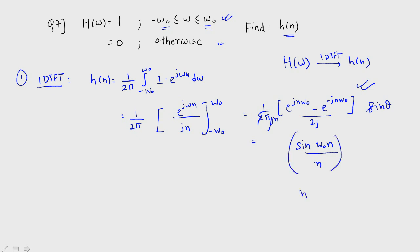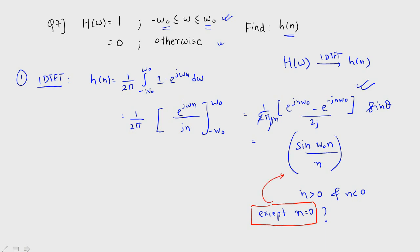This function is valid for n greater than 0 and n less than 0, but it is not valid for n equal to 0. Your question might be why — the answer is simple. If you put n equal to 0, you get sine of 0 upon 0, which is 0 over 0 — indeterminate, it cannot be found. So this is the function valid for every value except at n equal to 0. But how can we find the value for n equal to 0? The approach is using the limit.